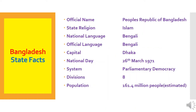Here are some facts about Bangladesh. Official name: People's Republic of Bangladesh. State religion: Islam. National language: Bengali. Official language: Bengali. Capital: Dhaka. National day: 26th March. System: parliamentary democracy. Divisions: 8. Population: 161.4 million people, estimated.